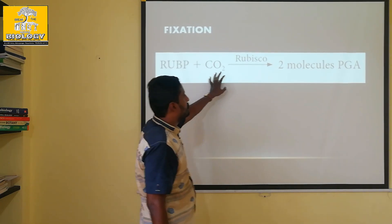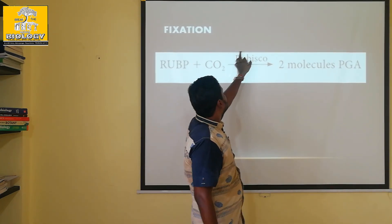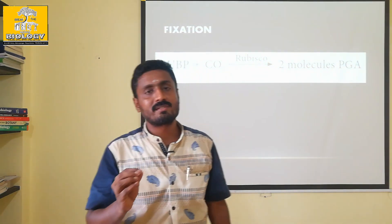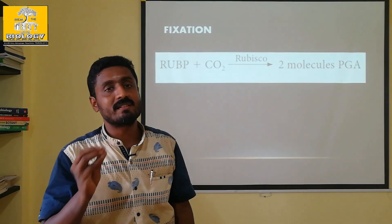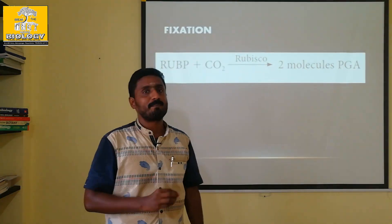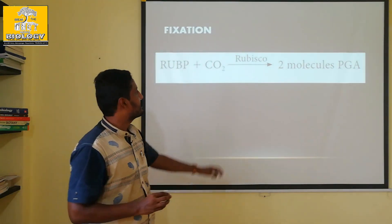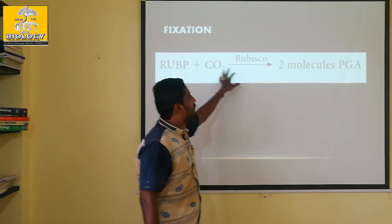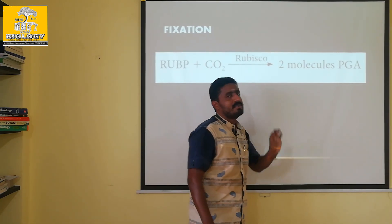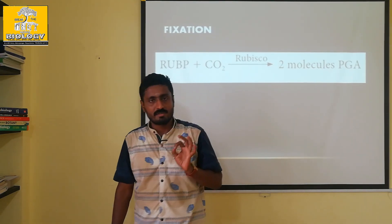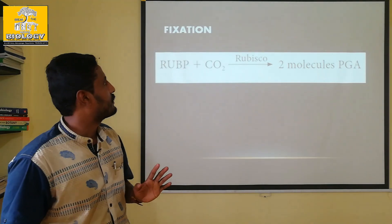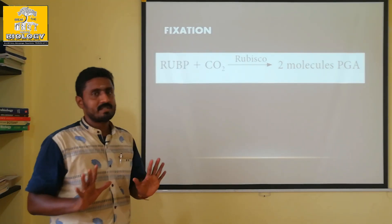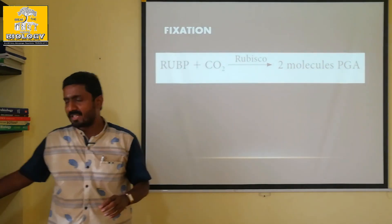RuBP plus CO2, using the enzyme Rubisco — RuBP carboxylase oxygenase — is responsible for the fixation of carbon dioxide into PGA molecules. This completes the fixation step.